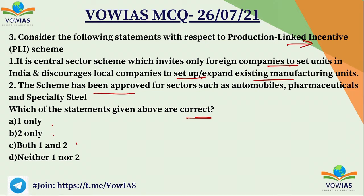The PLI Scheme is a central sector scheme for both domestic and foreign companies. Statement 1 is wrong because it discourages the claim that only foreign companies are invited — local companies are also encouraged. Statement 2 is correct, as the scheme has been approved for sectors like automobile, pharmaceutical and special steel. Therefore, B — 2 only — is the correct answer.